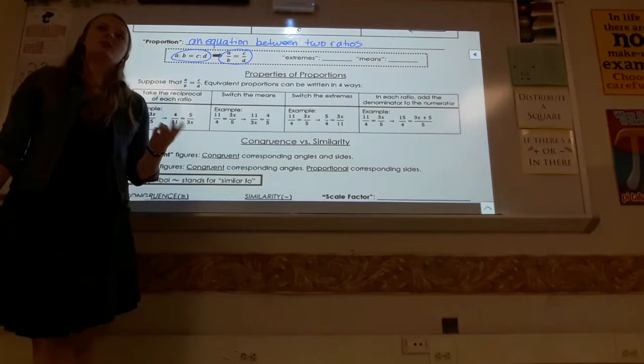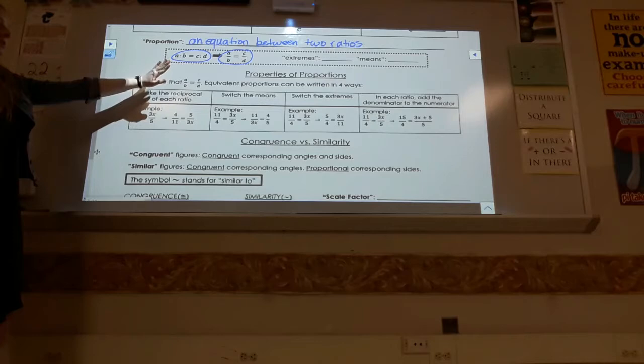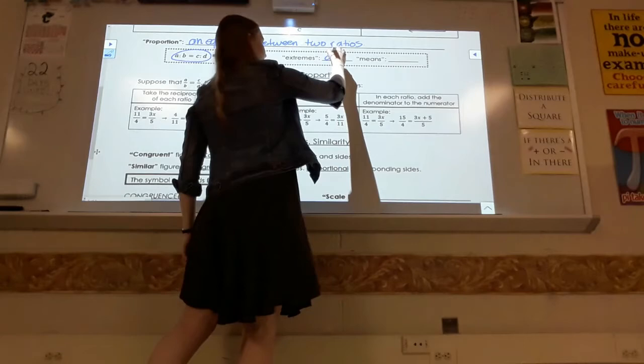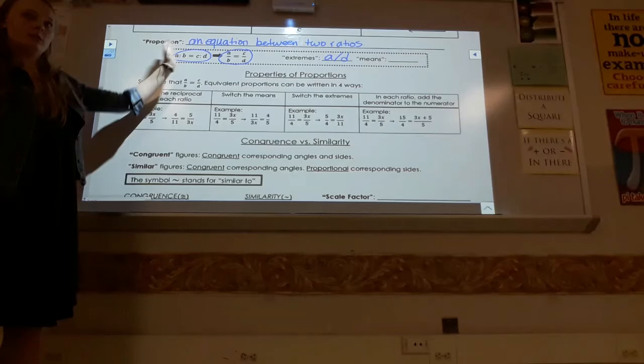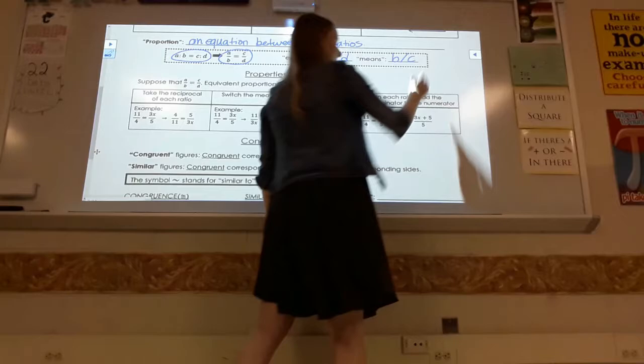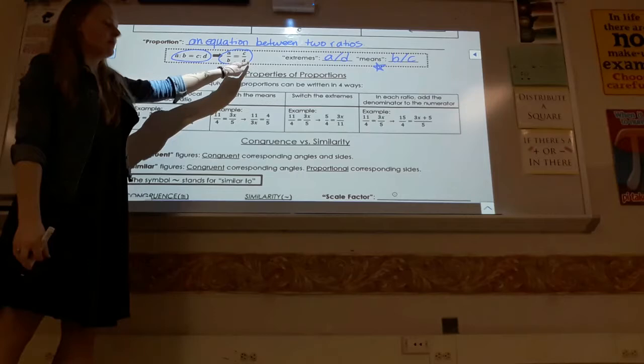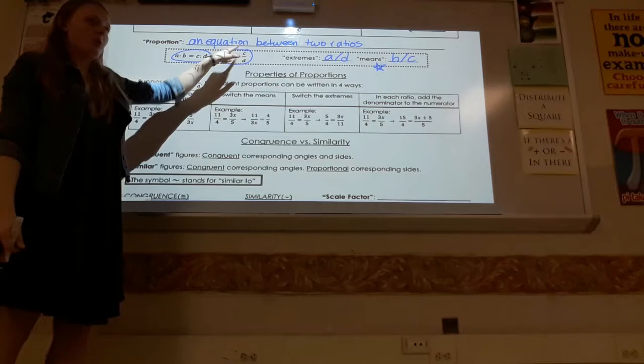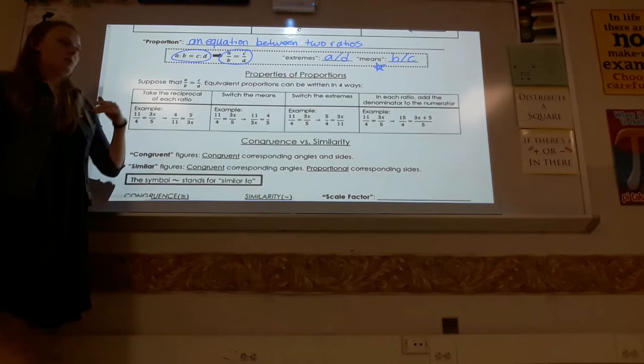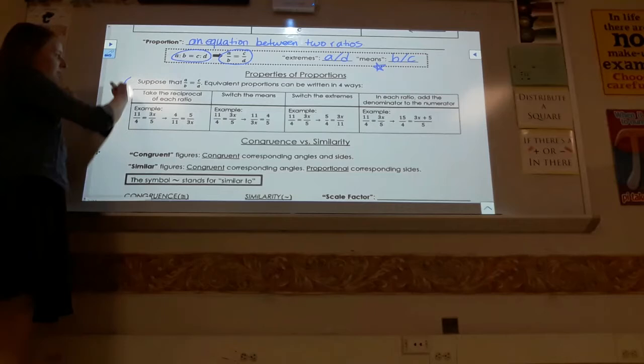There are two vocabulary terms: extremes and means. In a proportion A/B = C/D, the extremes are A and D — the first and last numbers. The means are B and C — the two middle ones. Remember 'means' especially, because we'll discuss geometric mean later.